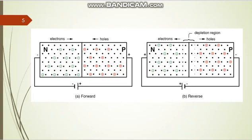In reverse bias, the majority carriers do not contribute current because they are swept out by the battery terminals — electrons are swept out by the battery positive terminal, and holes in the p-region are swept out by the battery negative terminal. The minority carriers — holes in the n-region and electrons in the p-region — constitute the current in reverse bias. Those minority carriers are generated by thermal excitation phenomena: when temperature rises, electrons absorb thermal energy and are excited to higher levels.